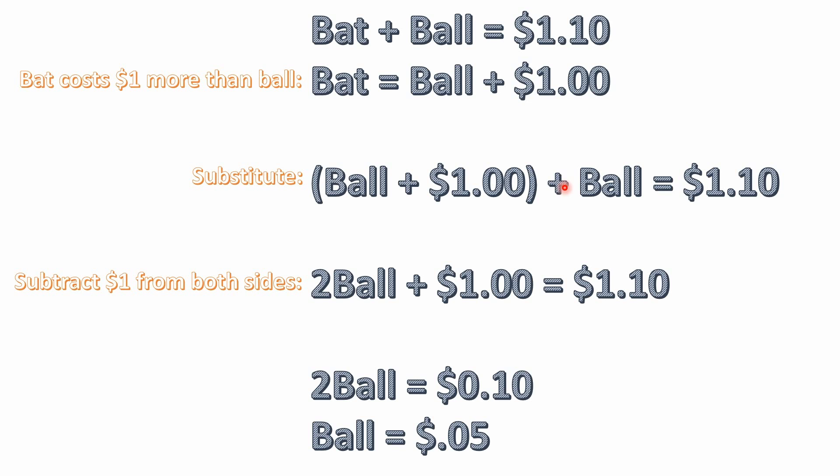The other thing they told us in the question is that the bat is equal to the cost of the ball plus $1 — the bat is worth $1 more than the ball. If you write that out as an equation: bat equals ball plus $1.00.